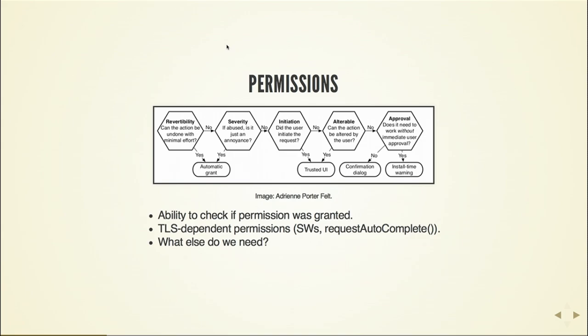Then we have a different model, for instance with Service Workers and Request Autocomplete, where you have an SSL certificate, and if you do, then you can access this API. Are we asking the right questions? For instance, for geolocation, we're kind of stuck because we can't really know if the permission's been granted before we actually make the request. And that's screwing us when we try to develop sites. So we need to fix those kinds of things.